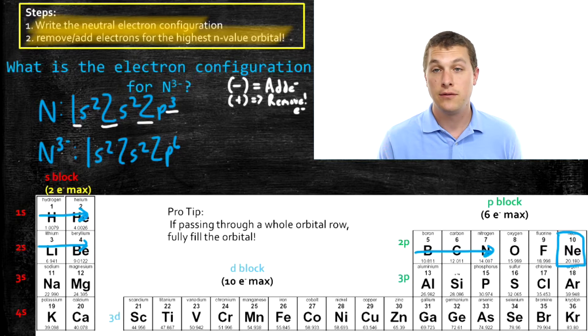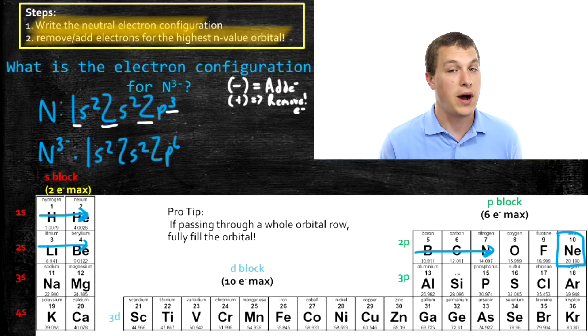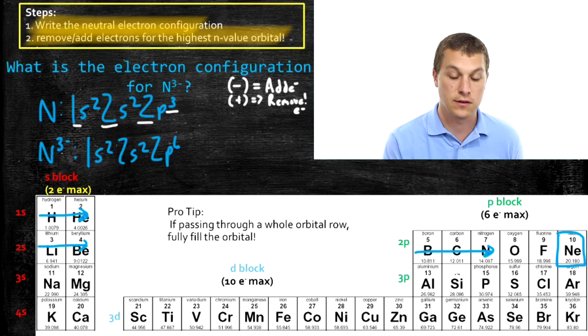Remember, for negatively charged species, you add electrons. For positively charged species, you're going to remove electrons. Let's do a few more examples.